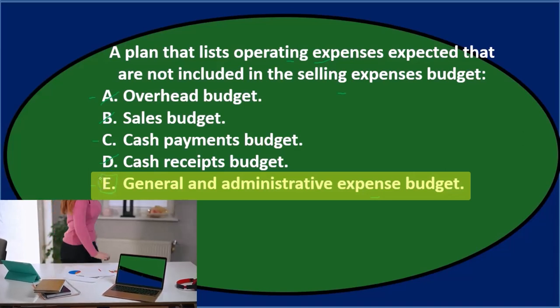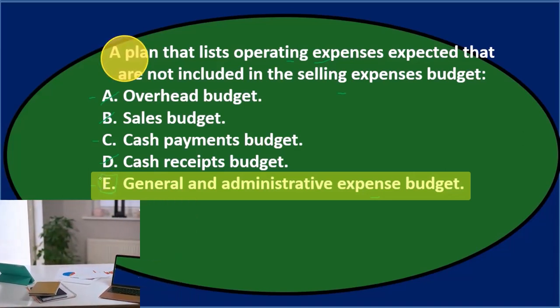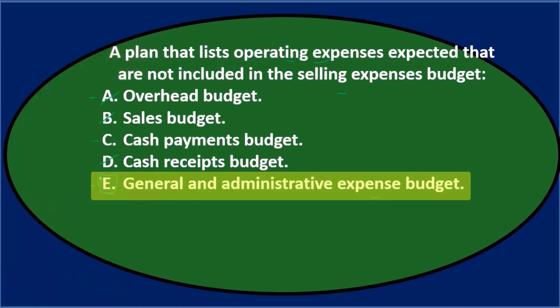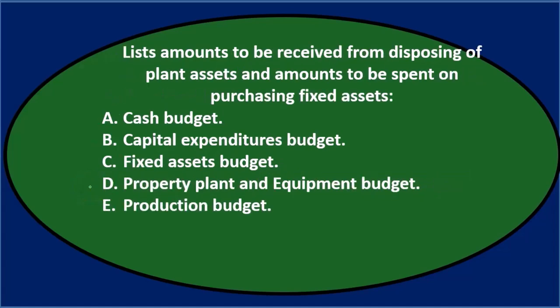Expenses final answer. A plan that lists operating expenses expected that are not included in the selling expenses budget. The answer is E: General and administrative expense budget.